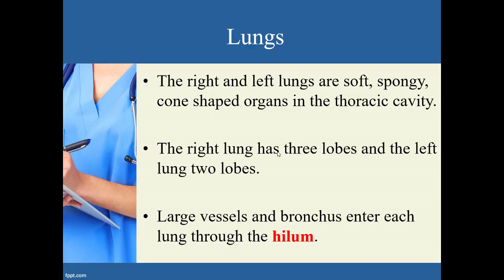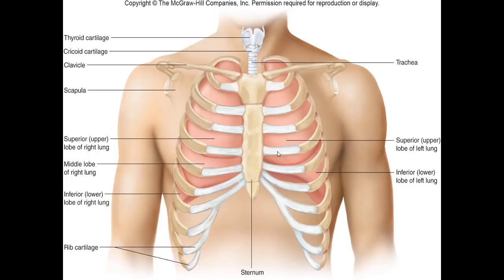Next, the lungs in more detail. These are soft, spongy, cone-shaped structures found in the thoracic cavity. The right lung has three lobes and the left lung has two. The hilum — a term from our last chapter — is the area where larger vessels and bronchi actually enter each lung. The image shows the upper lobe and lower lobe of the left lung, and the superior, middle, and inferior lobes of the right lung.